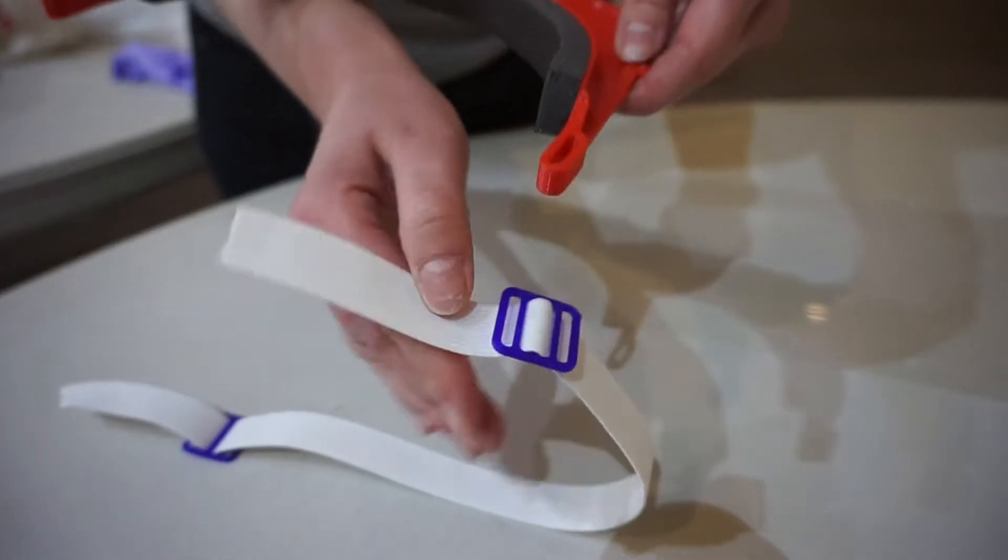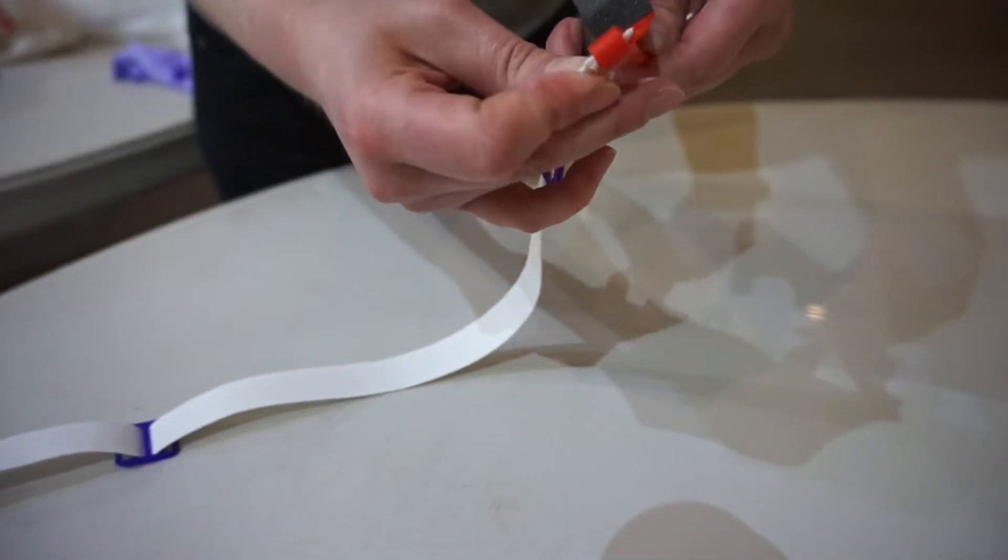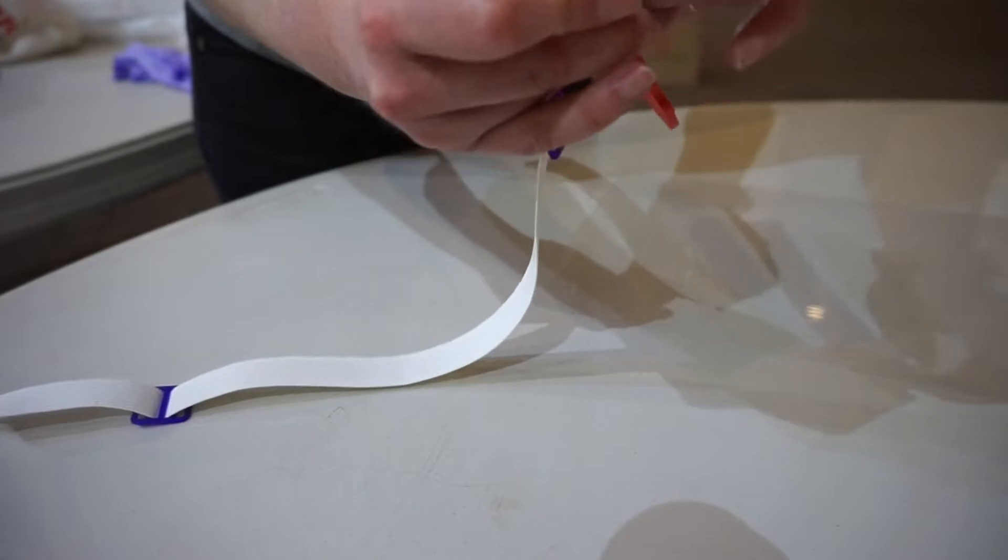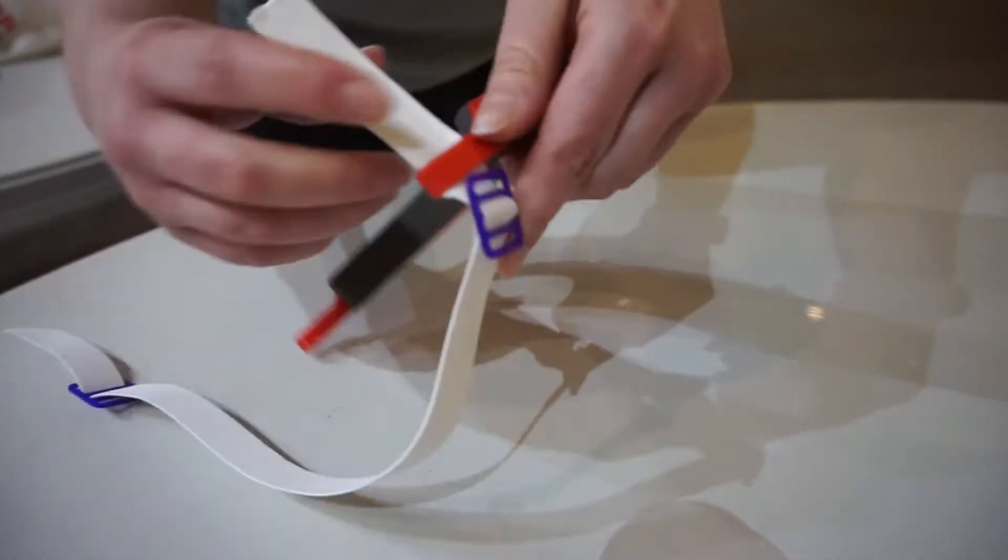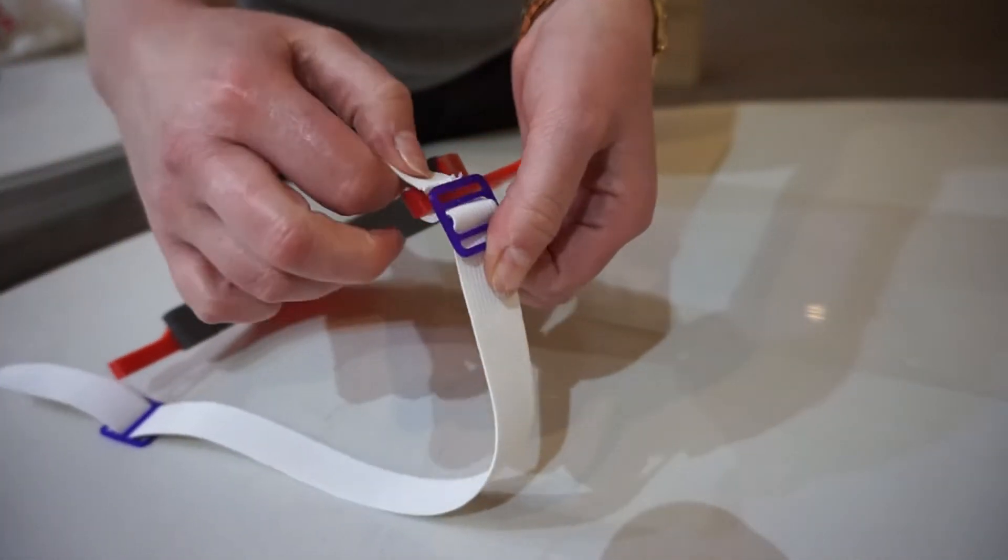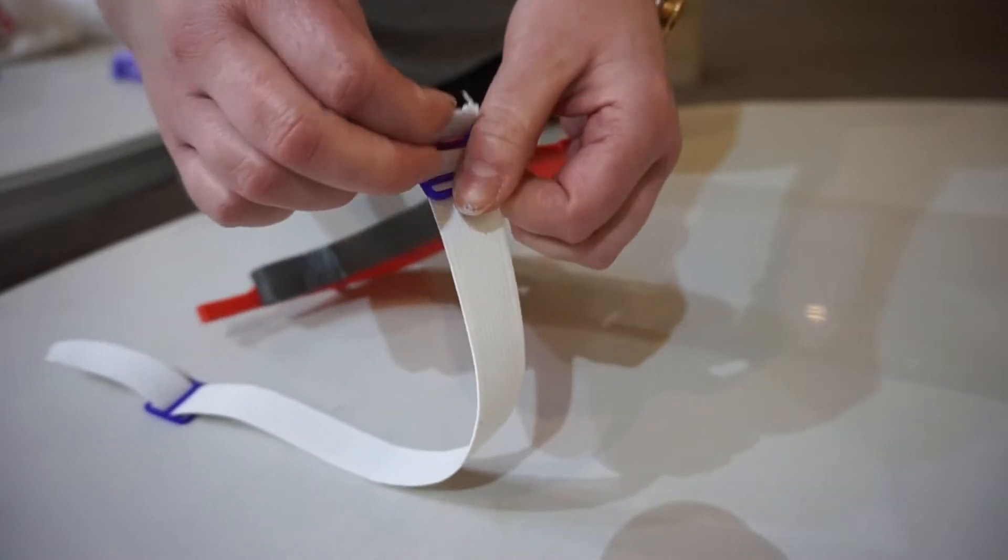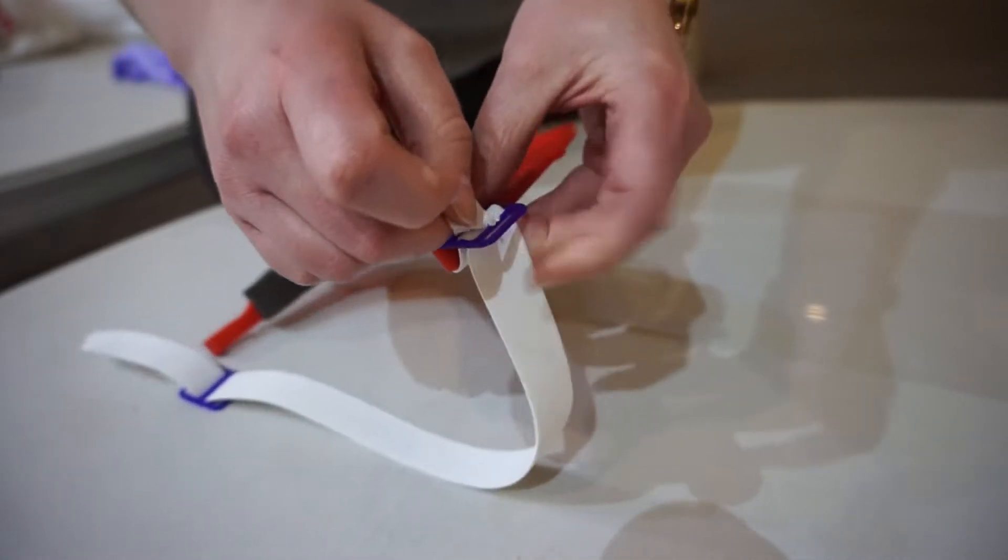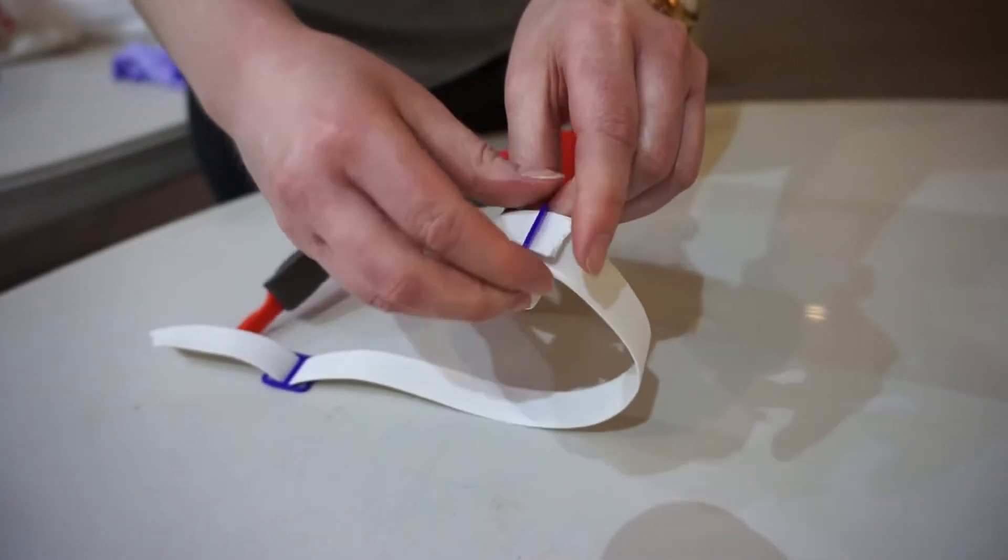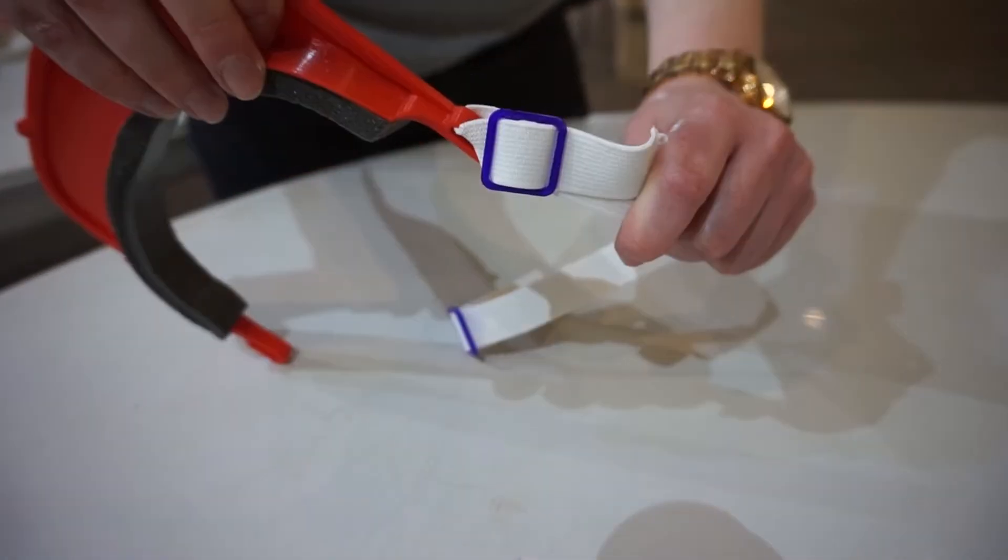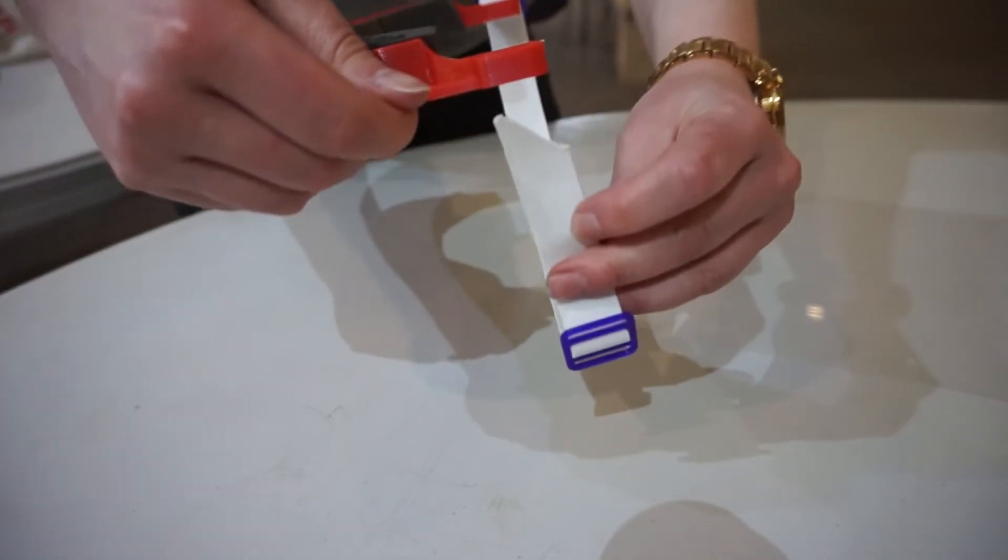To attach to the visor, hold the elastic and strap lock as shown and insert from the bottom side of the visor. Bring it back down the outside and feed as shown into the outer two holes. Repeat on the other side.